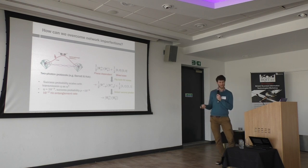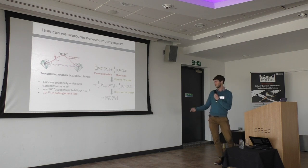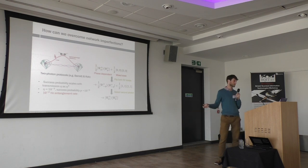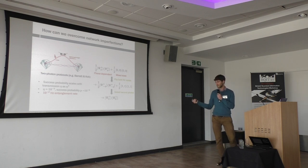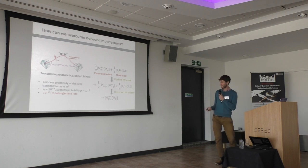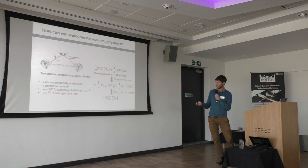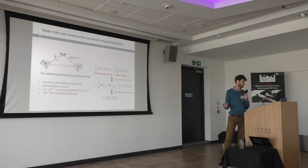For us, because of the zero-phonon line issue Jason discussed, as well as finite collection efficiencies, our transmission is on the order of 10⁻³. That means only one in 10⁻⁶ of our attempts successfully produce entanglement. For the long-distance entanglement demonstration over 1.3 kilometers, that was about one click every two hours. Even if the nodes are beside each other, you're not going to do much better than one every 50 seconds, which is pretty useless for building quantum networks. So the question is: how can we do better?